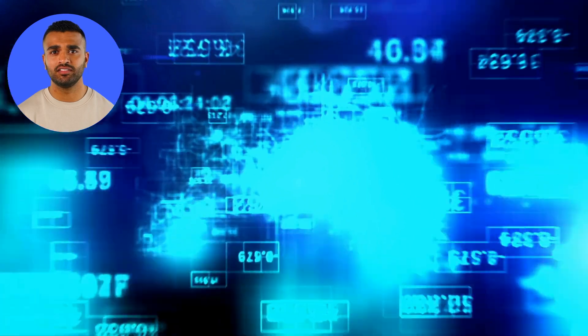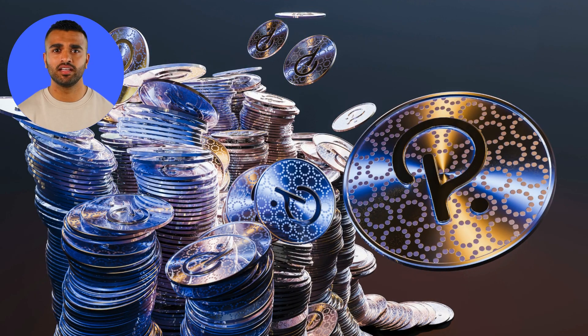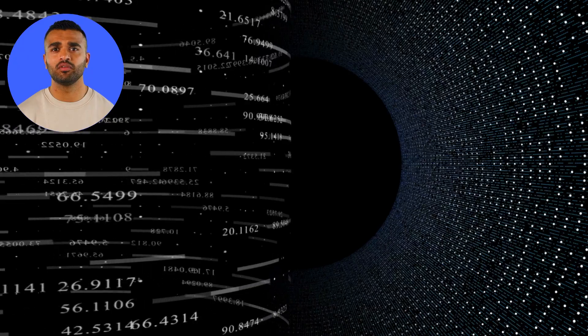Layer 0 sits below Layer 1. It's the infrastructure that connects multiple blockchains together. Projects like Polkadot and Cosmos enable interoperability, allowing different blockchains to talk, share data, and scale without losing independence.